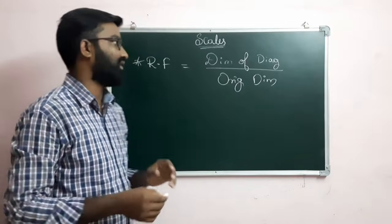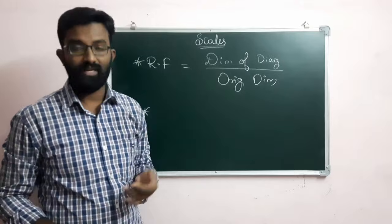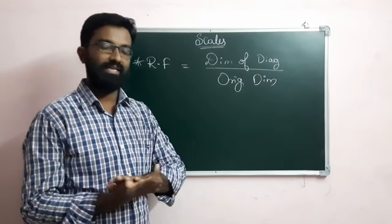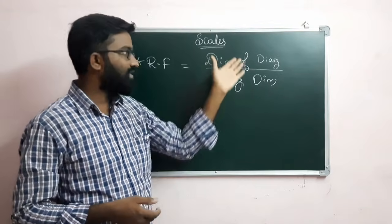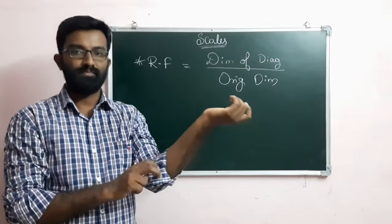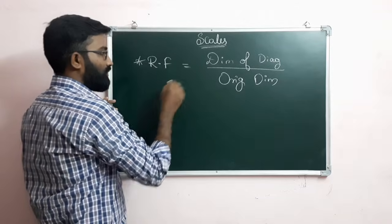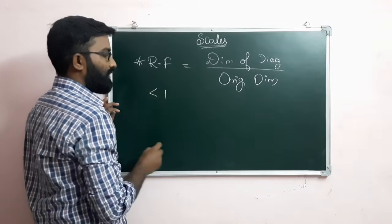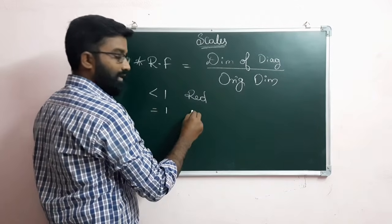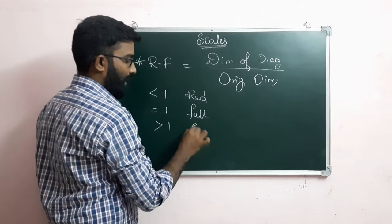The most important concept is: first, calculate the representative fraction. In most questions, the ratio is given and you identify the type of scale from that ratio. If the ratio is less than one, that is reduced scale. If the ratio is equal to one, that is full size scale. If the ratio is greater than one, that is enlarged scale.